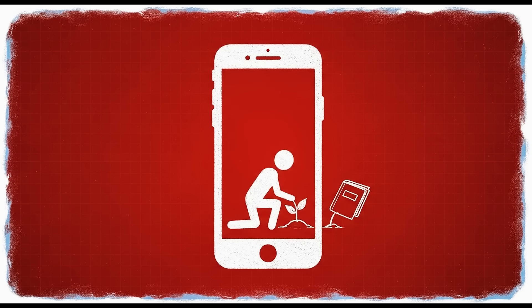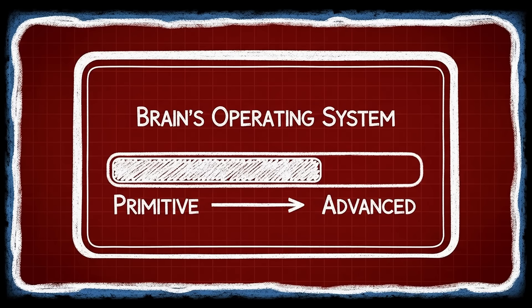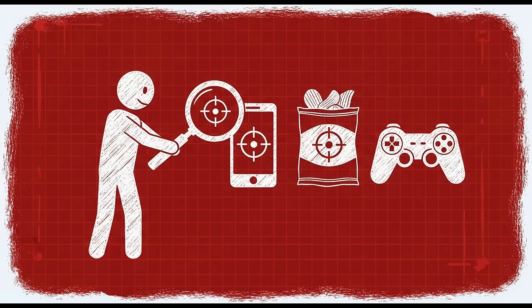True freedom is having a brain that works for you, not against you. It's being able to choose difficult things and actually enjoy doing them. It's waking up excited about your work instead of dreading it. It's going to bed satisfied instead of guilty.